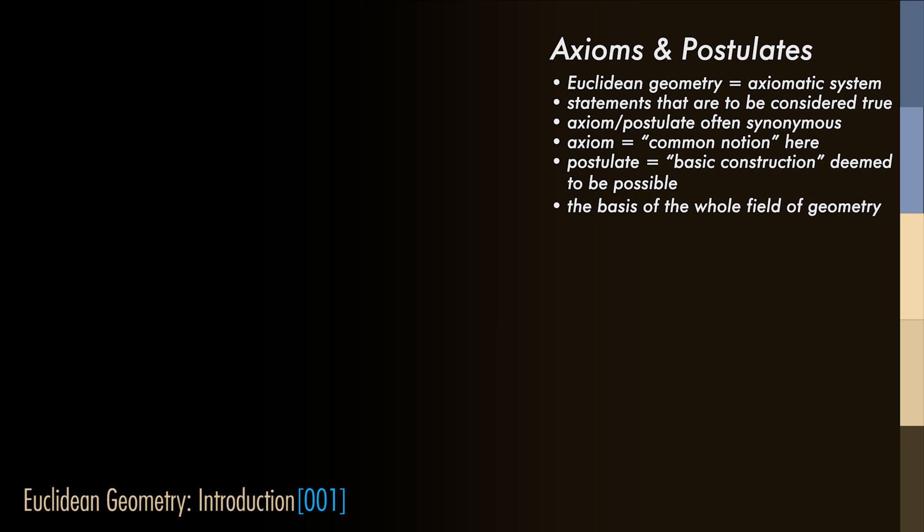Though the two terms, axiom and postulate, have mostly the same meaning, within Euclidean geometry there is a clear difference. An axiom is something which is a statement about something that is common knowledge and obviously true. The postulates in Euclidean geometry are more about discovered constructions that are assumed to be possible.